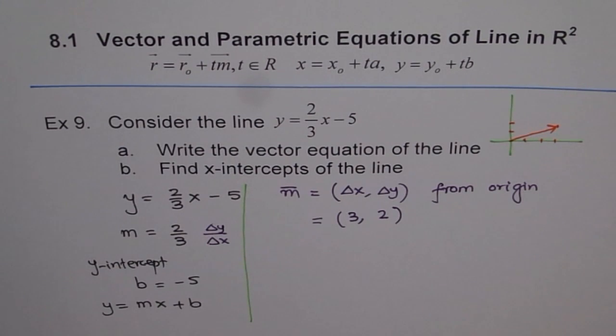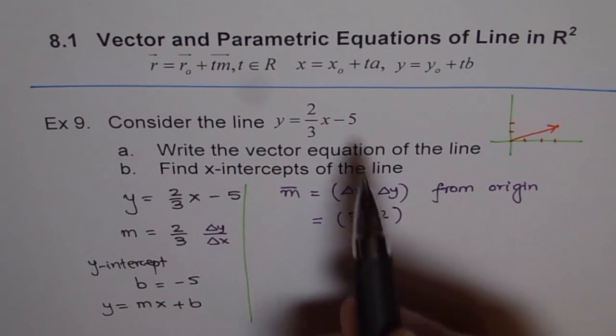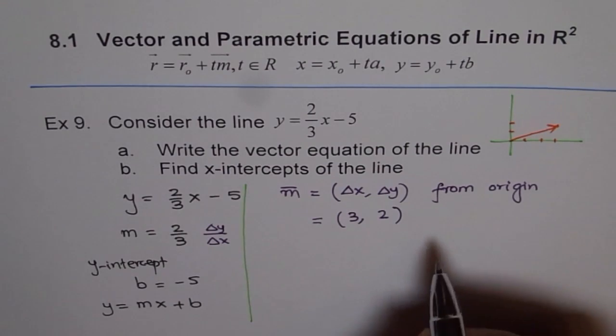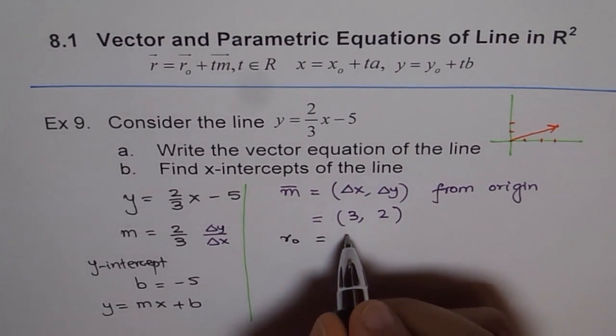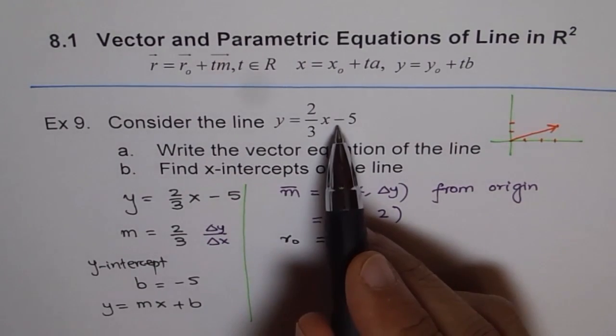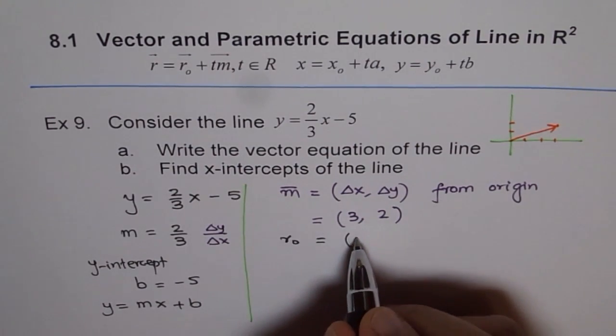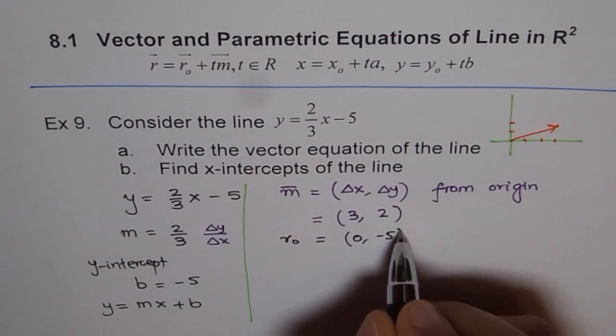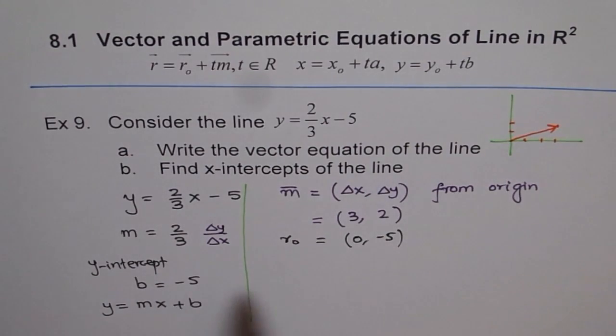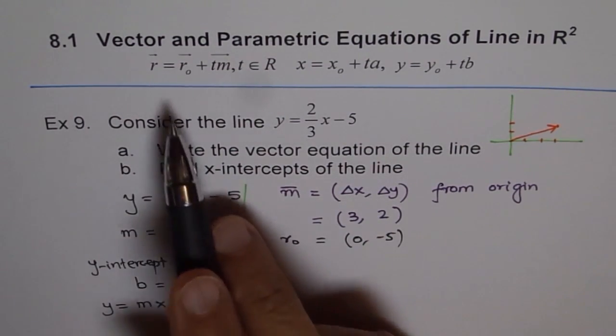Now, for writing equation of a line in vector form, we need direction vector and a point. So the point which we are going to use here is the y-intercept. The point which we will call as r0 is equal to the value at y-intercept, which is at 0 minus 5. The y-intercept given in this equation will be used as our point on the line. And then we can write r0.